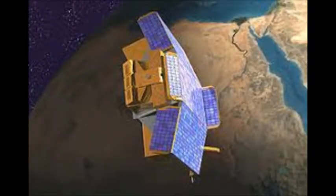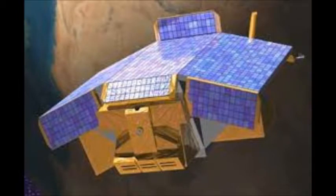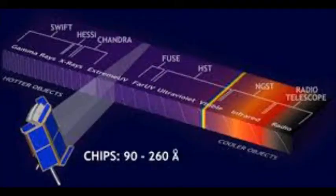Cosmic Hot Interstellar Plasma Spectrometer. The Cosmic Hot Interstellar Plasma Spectrometer was a University Class Explorer mission. The CHIPS program demonstrated that a small, 65 kg, 3-axis stabilized spacecraft and science instrument could be built and operated for a fraction of the cost of traditional missions.